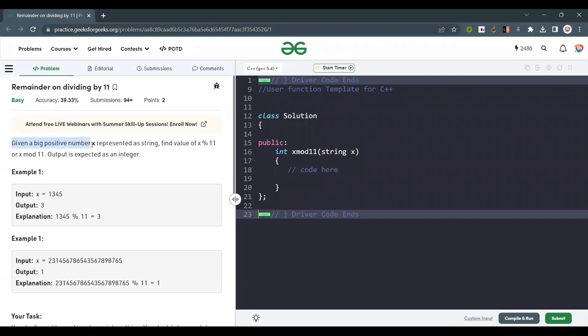Given a big positive integer number x represented as string, find the value of x modulo 11 or x mod 11. Output is expected as an integer.